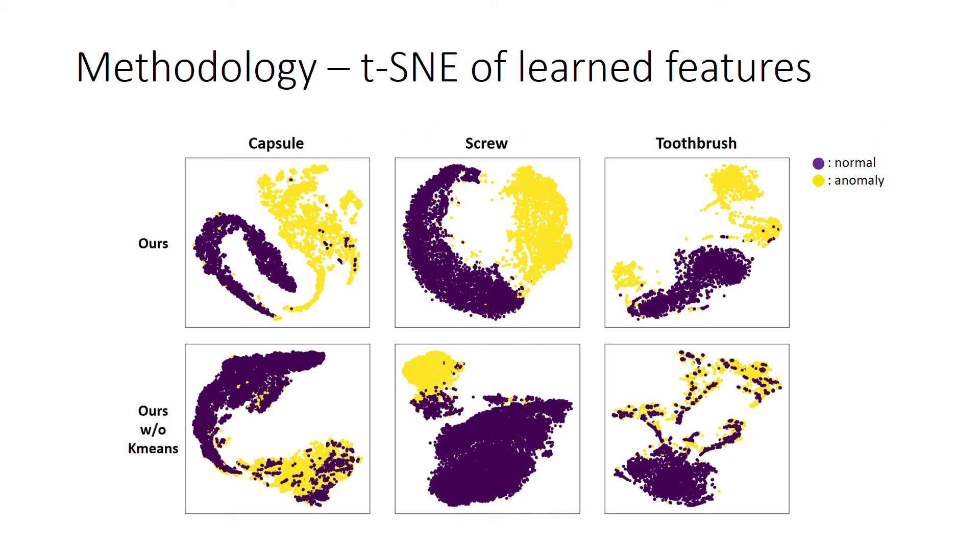From the TSNE visualization, we can see that the normal patches and the anomalous patches are well separated in the learned feature space.